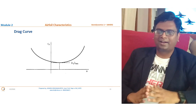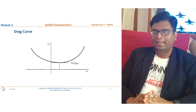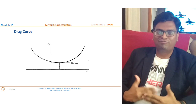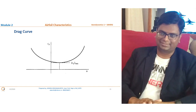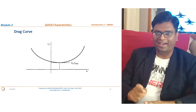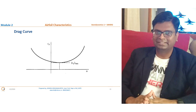Next, the drag curve — also called the drag polar — represents the variation of coefficient of drag with angle of attack. As the angle of attack increases from a more negative value, the coefficient of drag decreases, reaches a minimum at a certain angle of attack, and then increases again beyond that point. This is a very important graph with respect to this course.